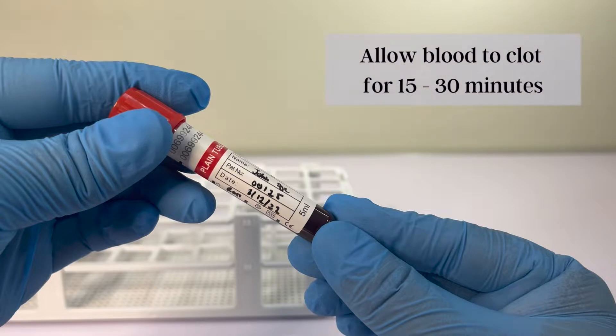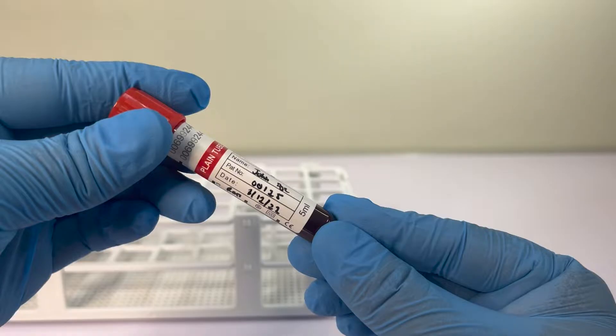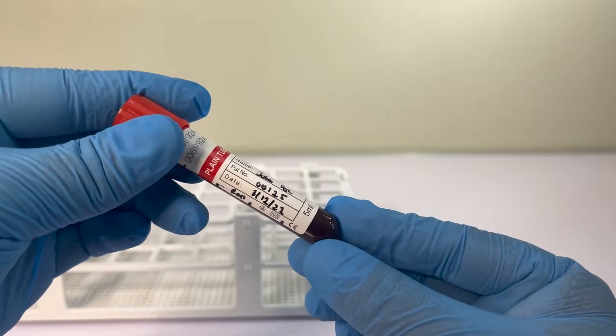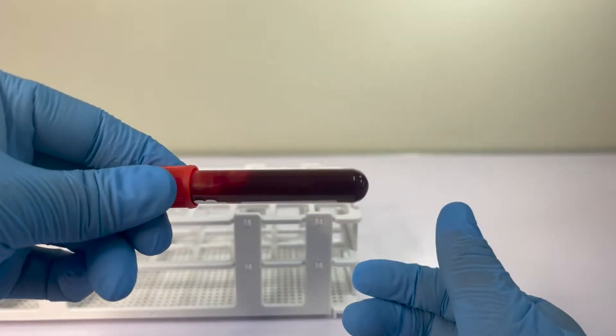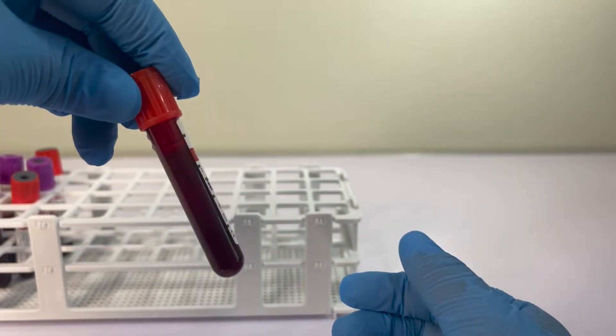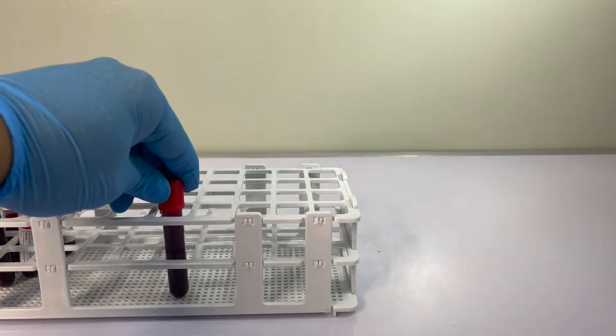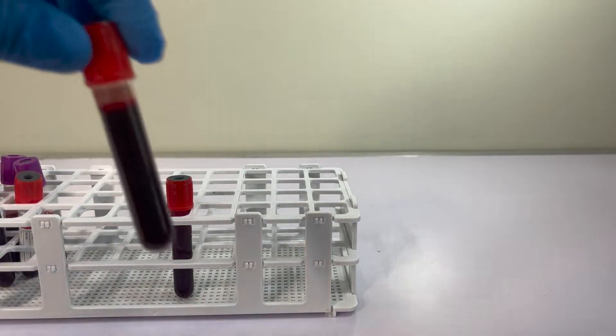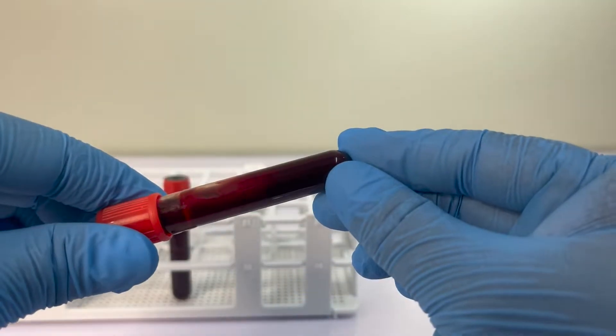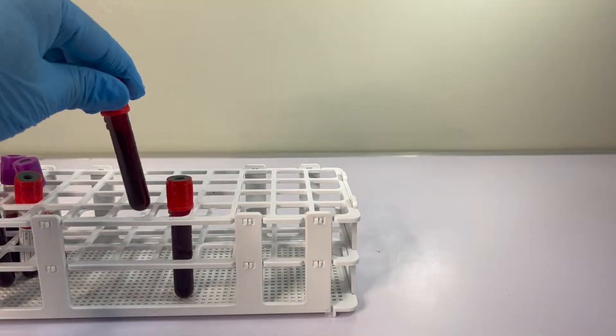In order to collect serum, we have to allow our blood to fully clot, which normally takes anywhere from 15 to 30 minutes. Check if the blood has fully clotted by tilting the tube gently. If the blood is still not clotted, allow the tube to stand for a few more minutes. Avoid vigorous shaking of the tube as this may cause hemolysis.